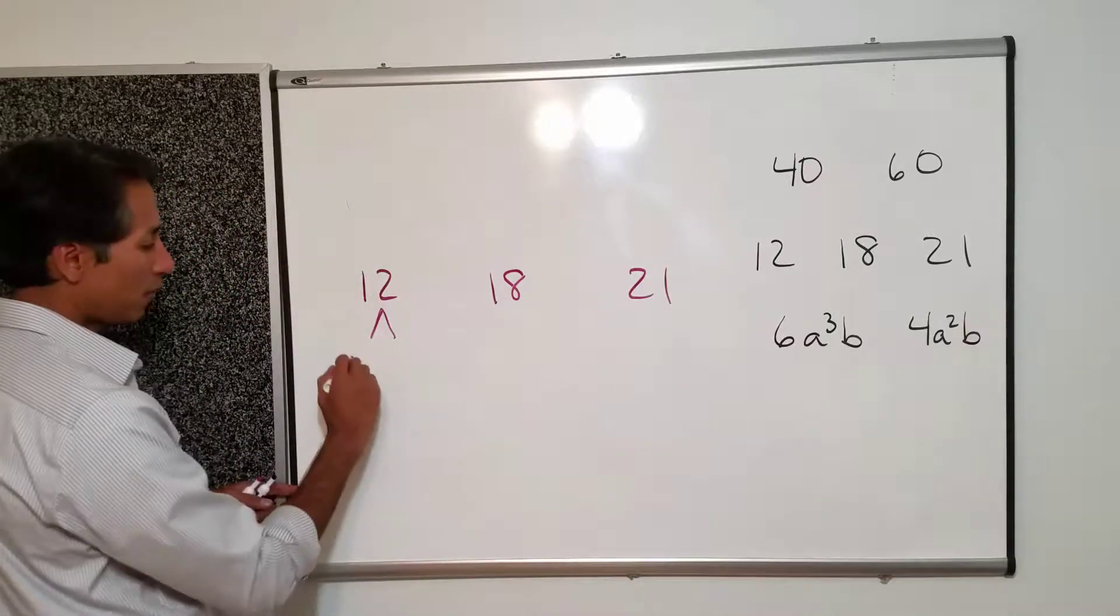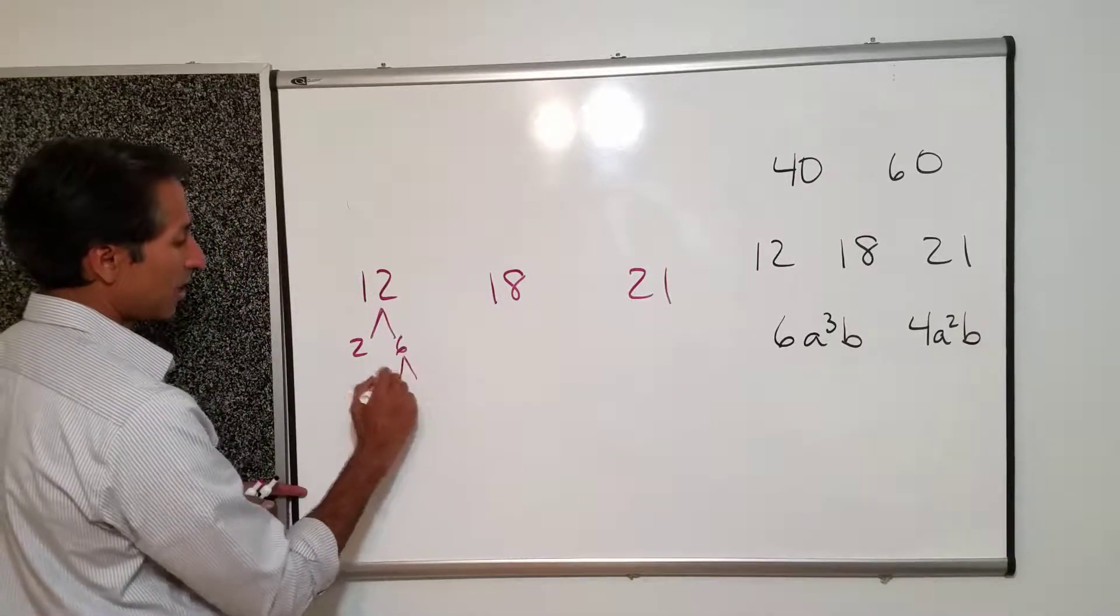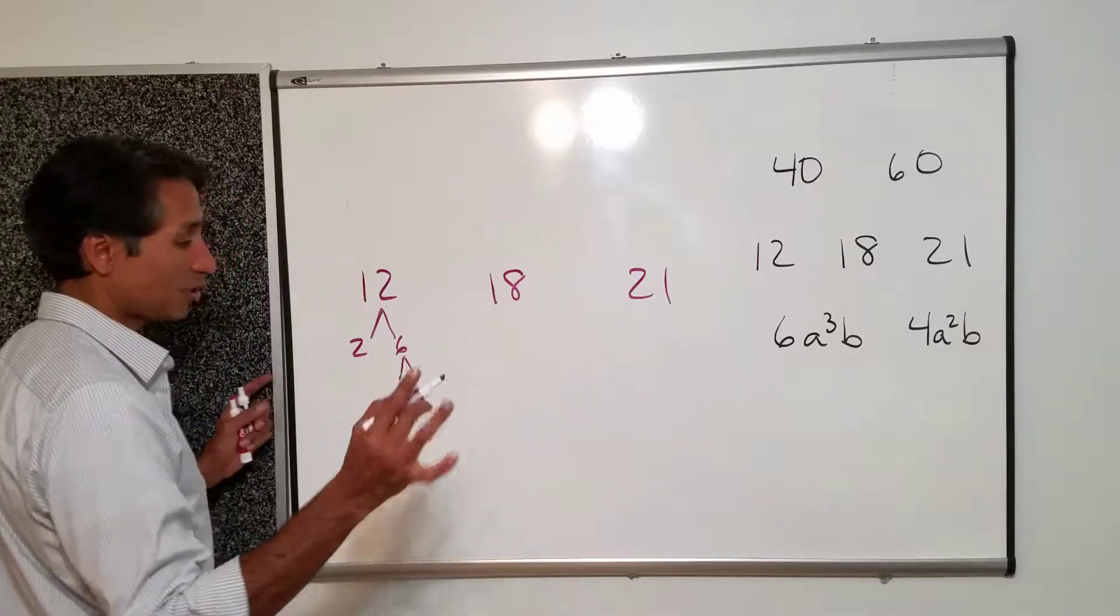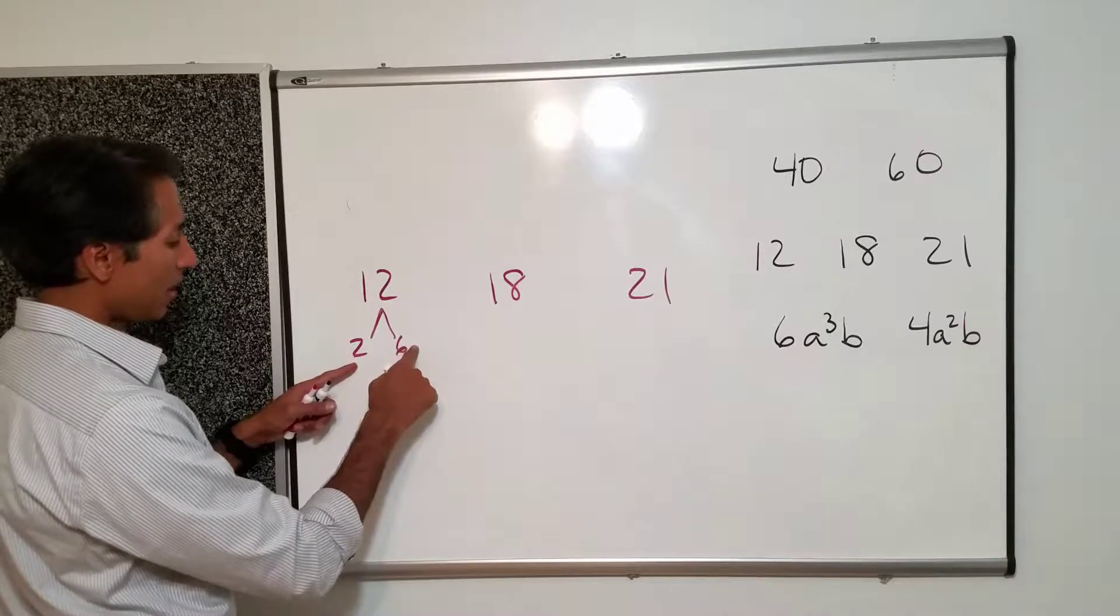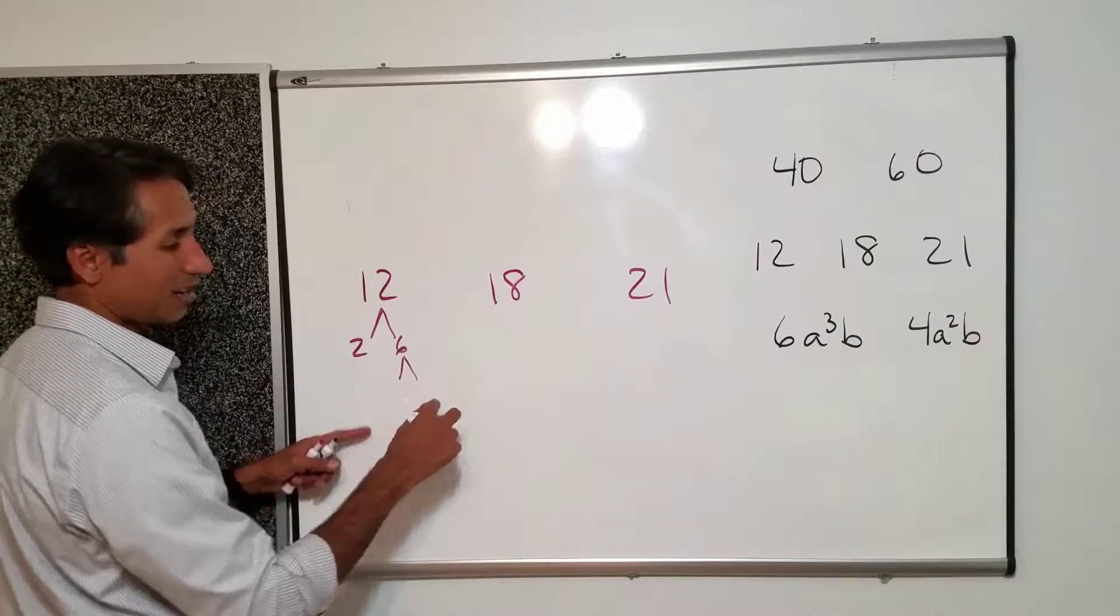When you have three of them you're just going to make three factor trees. So the 12 is what? Two and six. Again I like to start with my twos. That's just the way I do it. Because I think that it's a lot easier.